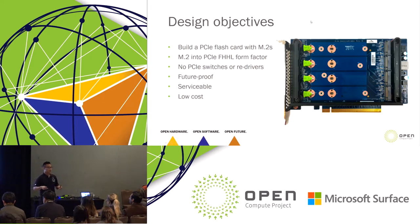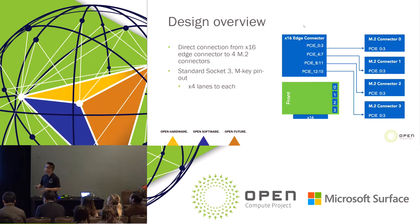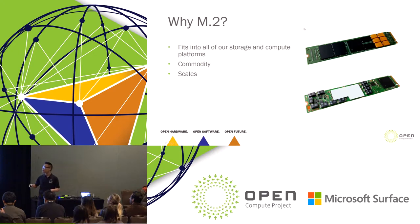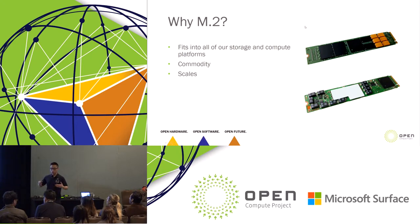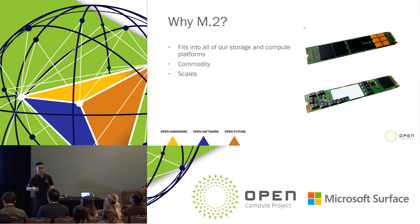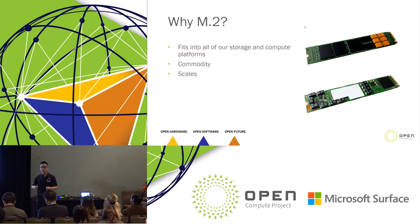Hopefully as I go over the material, these design tenets will come out and be obvious as to why we made specific design decisions. Before we dive into the design of Ava, I wanted to briefly talk about why M.2. Three main reasons at a high level: first, it fits into all of our compute and storage platforms. We have a lot of M.2s at Facebook, so we can leverage the drives that have already been qualified across multiple platforms that we've built.